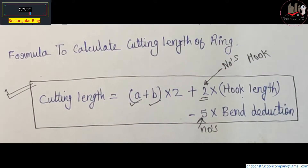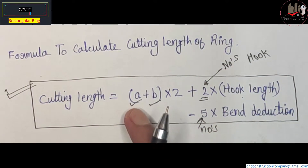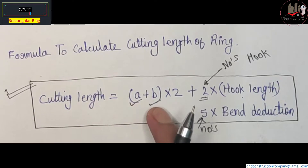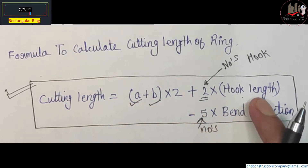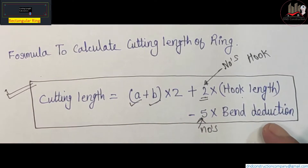This is our cutting length formula. We will calculate one by one: value of A, value of B, hook length, and bend deduction.